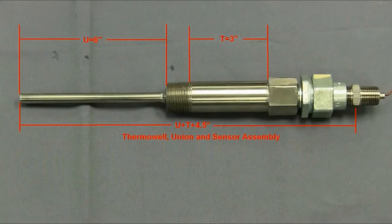The known or fixed lengths are the thermowell hex and thread, the union coupler, and the spring-loaded sensor hex. These total 4.5 inches. The factory would then go and order a sensor with an overall length of 13.5 inches.